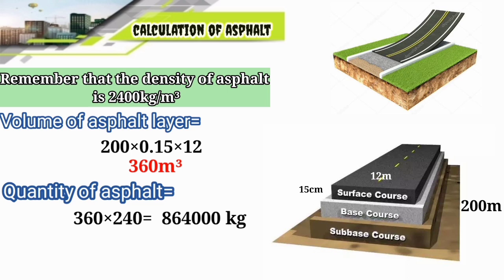Now we have to convert it to tons. We know that one ton equals 1000 kg, so if we divide 864,000 by 1000, it gives us 864 tons of asphalt required for that particular road.